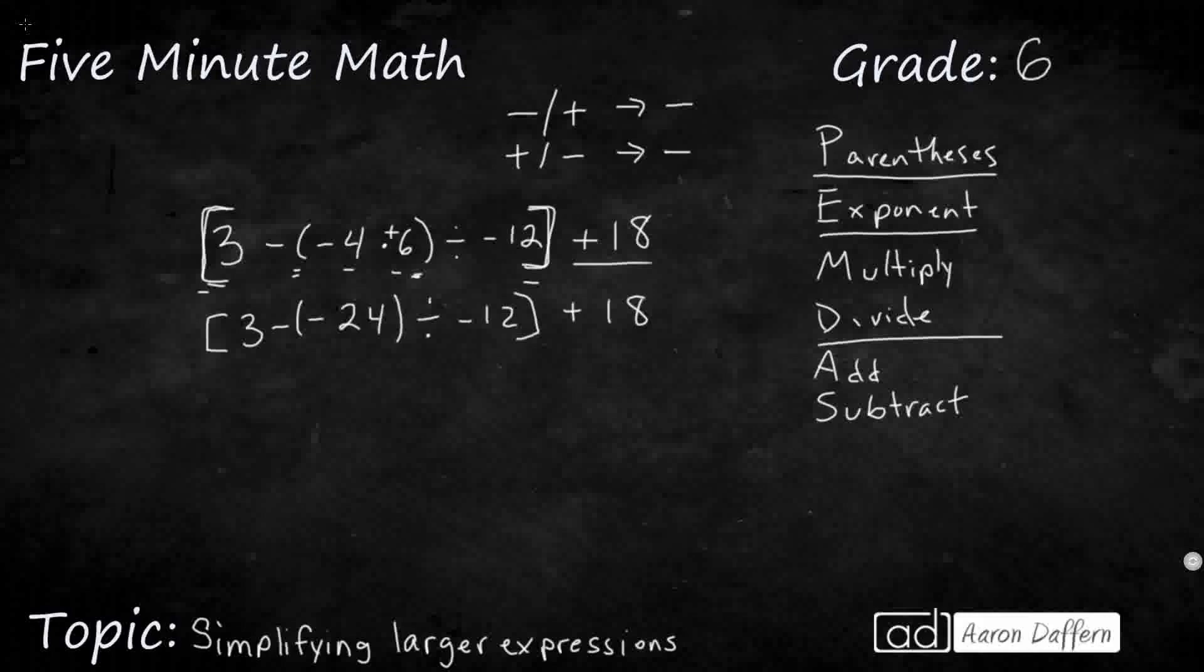Now, we're not going to subtract negative 24 here, because think of order of operations. What do we have? We have a subtraction. We also have division. And which one do we do first? We always do division first.